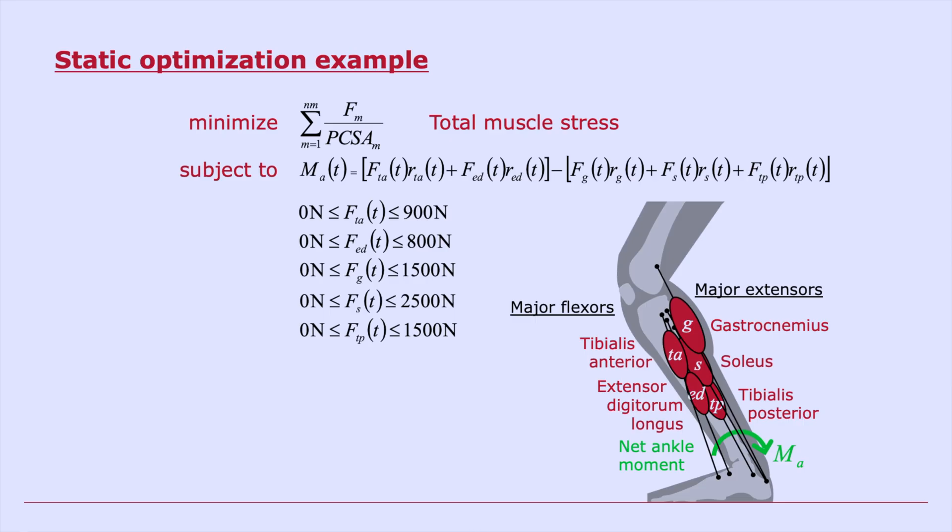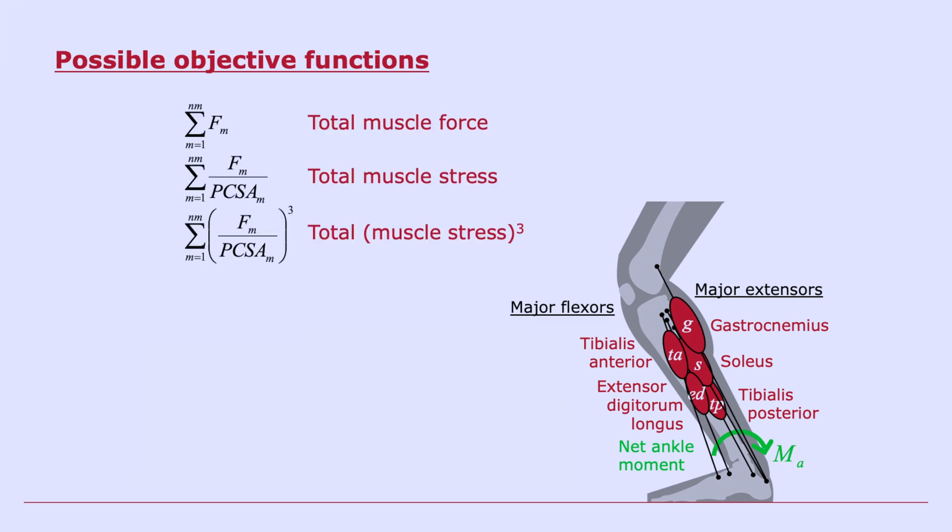There are better objective functions we might try. We might try minimizing the total muscle stress, thinking that the body would try to avoid injury. So we want to minimize some measure of stress. We might choose other objective functions. This one is somewhat similar to metabolic energy. There's a study that found that we can cube the muscle stress, get a good approximation of metabolic energy in some cases. Okay, so we need to select an objective function. We could pick all kinds of different objective functions. And the objective function we pick will have a dramatic effect on the solution we get.